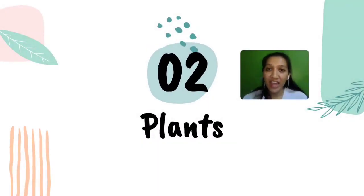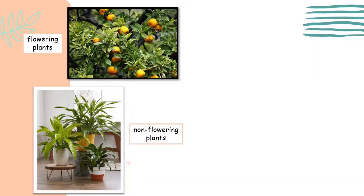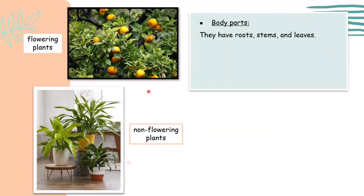Let's move on to plants. Plants come in different shapes and sizes. There are two types: flowering plants and non-flowering plants. Both types have roots, stems, and leaves. Flowering plants also have flowers and fruits.